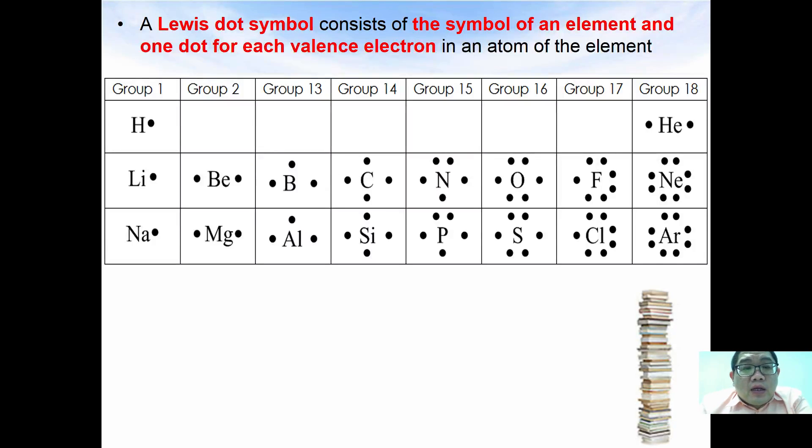A Lewis dot symbol consists of the symbol of an element and one dot for each valence electron in the atoms. For example, hydrogen has one valence electron so hydrogen has one dot, helium has two electrons so helium has two dots. Lithium from group one has one dot, beryllium two dots, boron from group 13 three dots, carbon from group 14 four dots, nitrogen from group 15 five dots, oxygen from group 16 six dots, fluorine from group 17 seven dots, and neon from group 18 eight dots.